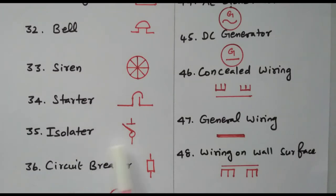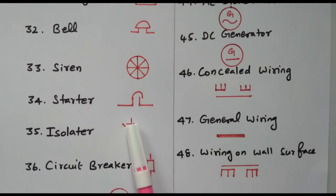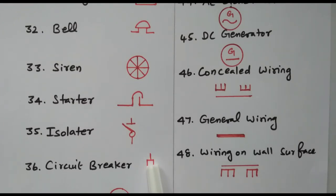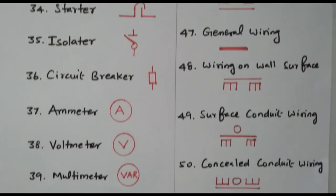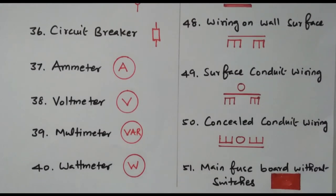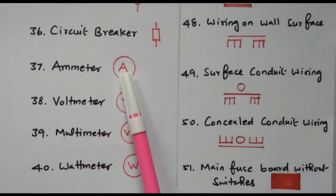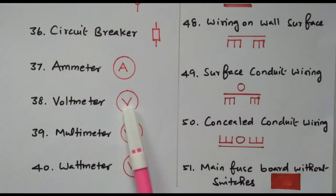Then the isolator shows a supply line with an isolation gap. Then the circuit breaker is represented by a box with two lines in vertical manner, so the line goes through the breaker. Then we have ammeter represented by A, voltmeter represented by V.